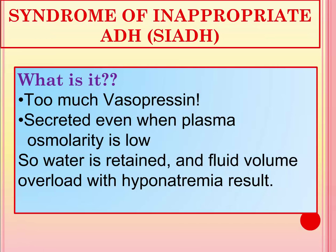That brings us to the opposite of diabetes insipidus — SIADH, or syndrome of inappropriate ADH. This is when there is too much vasopressin or antidiuretic hormone. Normally, when serum osmolarity is low, ADH production slows down and its release ceases. However, in people with SIADH, vasopressin is secreted even when plasma osmolarity is low, so water is retained and fluid volume overload with hyponatremia results.